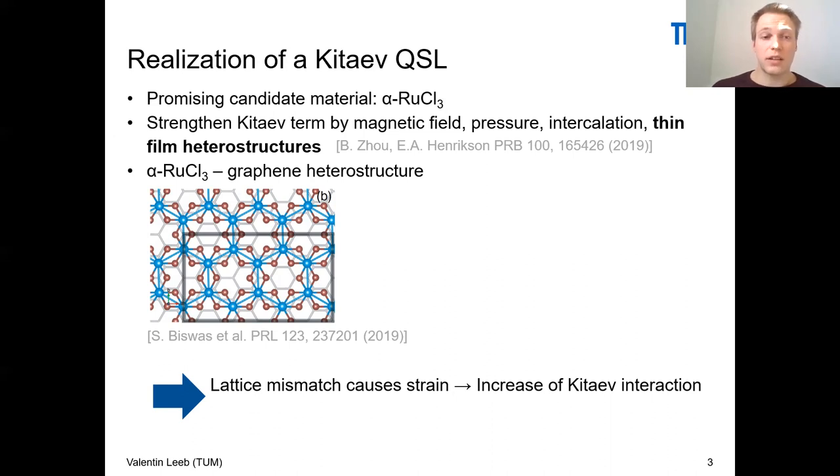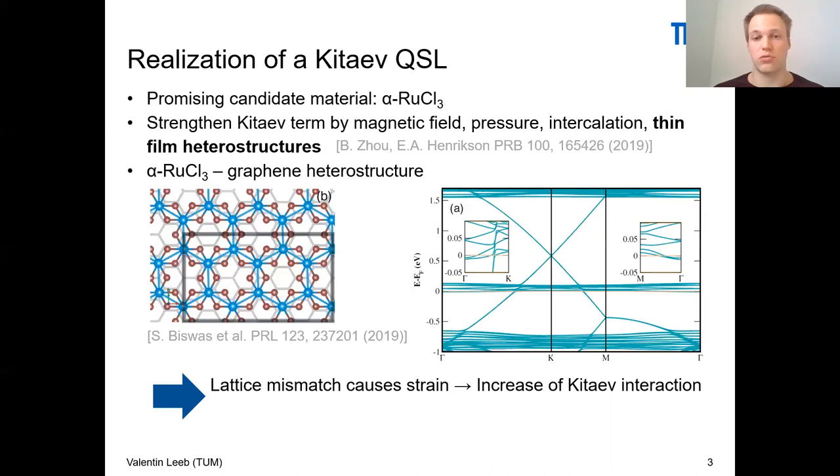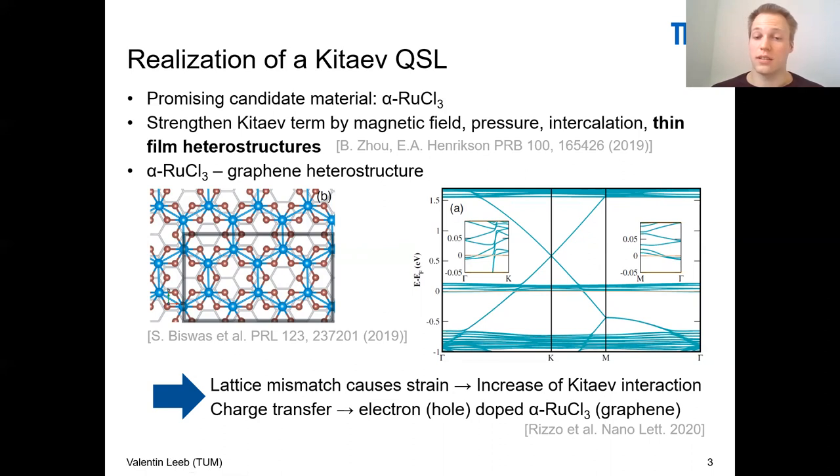People have studied this heterostructure with density functional theory and computed the band structure. What you can see is that it is a mix of the graphene band structure and the excitations of the Kitaev honeycomb model. This large Dirac cone is the Dirac cone of graphene, which is shifted by around 0.6 electron volts, and hence it has been concluded that the graphene layer becomes hole-doped in this heterostructure. These effectively flat bands around the Fermi energy are the bands of the Kitaev layer, which have a much smaller bandwidth.